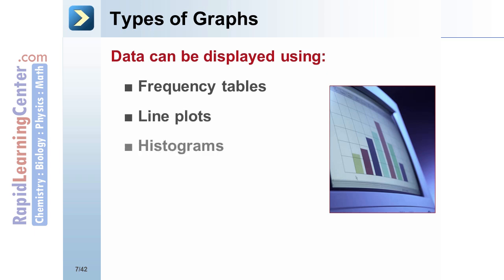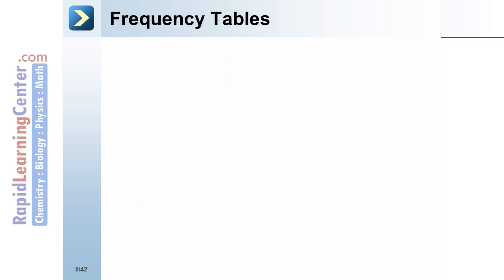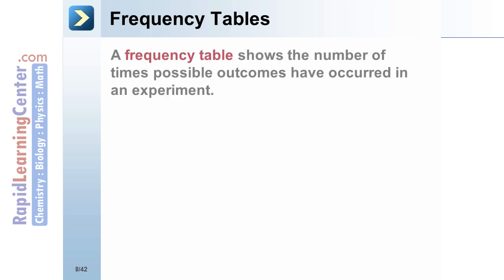Types of graphs: data can be displayed using frequency tables, line plots, histograms, box and whiskers plots, or stem and leaf plots.